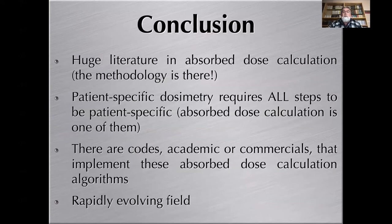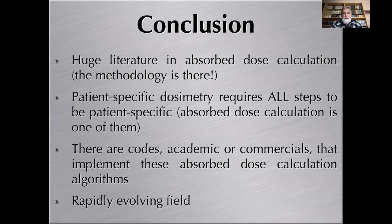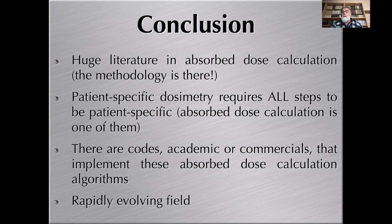As a conclusion: there is a huge literature in absorbed dose calculation and the methodology is there. Patient-specific dosimetry requires all steps to be patient-specific — D = A·S is just one step, but there are others. There are academic and commercial codes that implement these absorbed dose calculation algorithms, making it feasible in a clinical environment. It is rapidly evolving, and it is very interesting to see the progression of this domain. Thank you very much for your attention. This concludes the last of five lectures on radiopharmaceutical dosimetry, made under the IAEA Technical Cooperation Program, project POLL 9025.